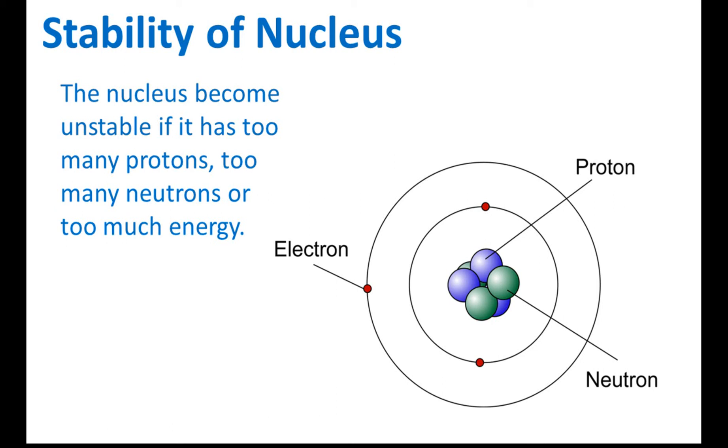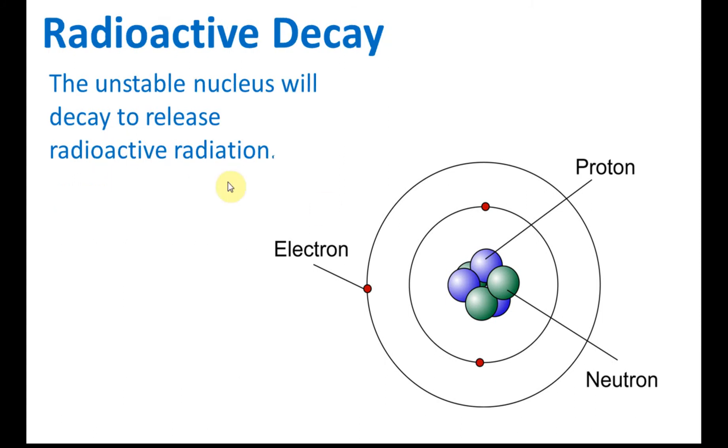When it's not stable, it will try to release something to make itself become stable, and that is called radioactivity. This process will produce radiation, and that radiation is called radioactive radiation. So the unstable nucleus will decay to release radioactive radiation.